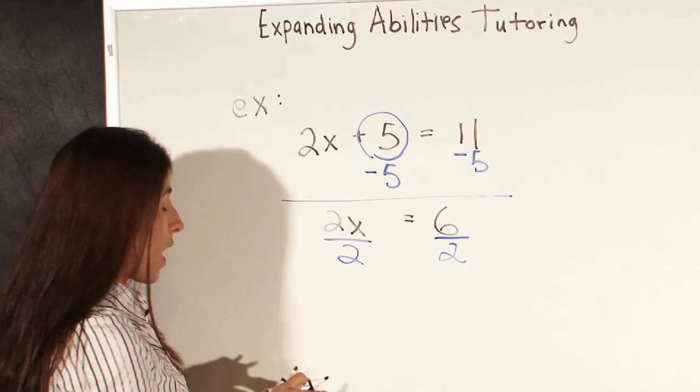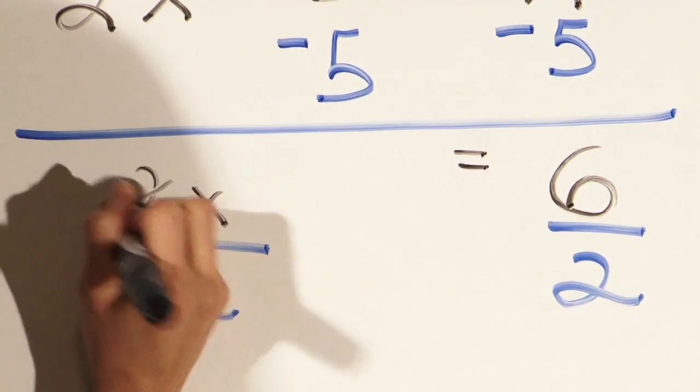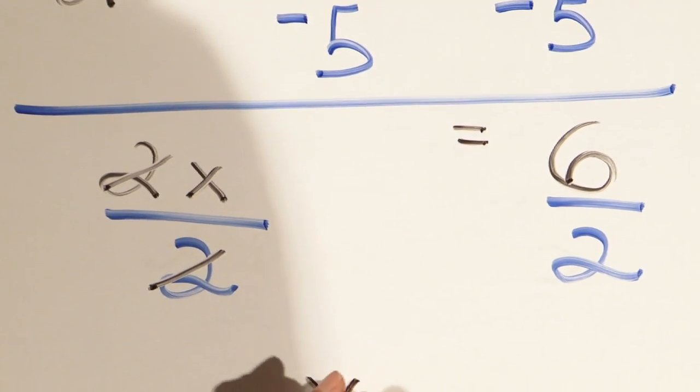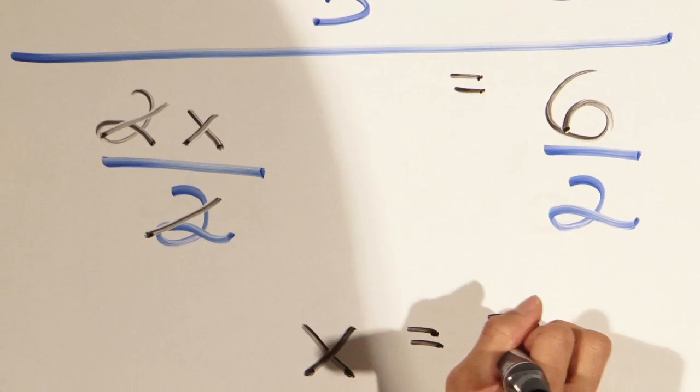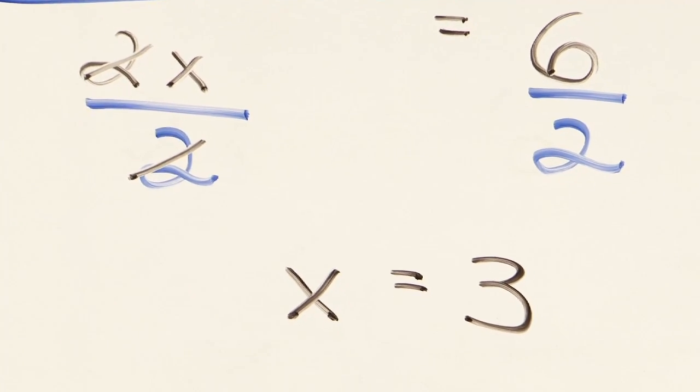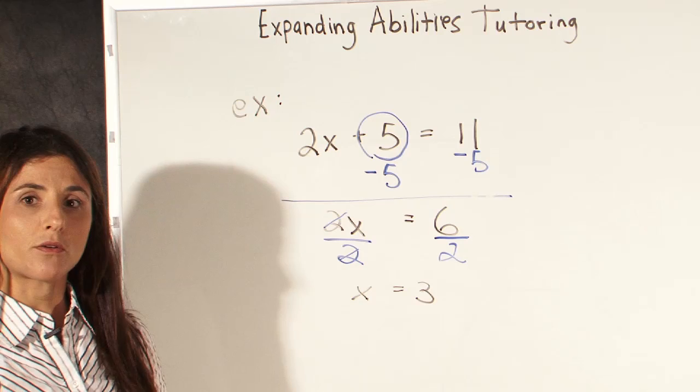And 2 divided by 2 is 1, so these two things cancel, and we're left with x equals 6 divided by 2 is 3. And there are some tips for solving a simple algebraic equation.